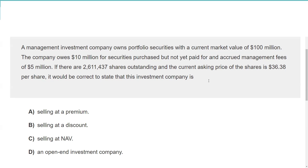If there are 2,611,437 shares outstanding and the current asking price is $36.38 per share, is this investment company selling at a premium, discount, or at the NAV? Selling at a premium means it's trading for more than the NAV. Selling at a discount to the NAV per share would mean it's definitely a closed-end fund, since no open-end fund can possibly trade for less than the NAV.